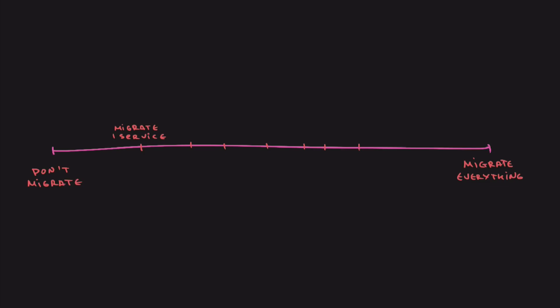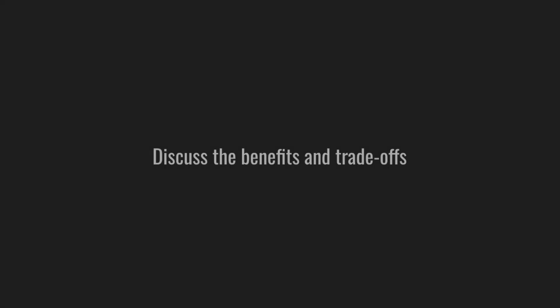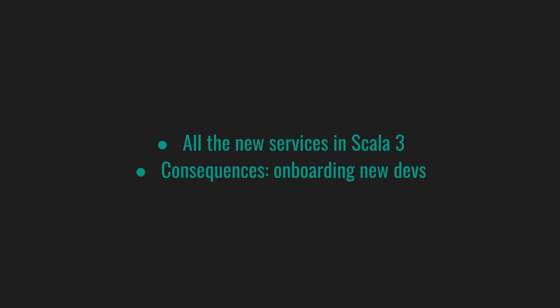Or should you leave the old services untouched and write all the new services in Scala 3? What about internal libraries? How much time and resources can you allocate? The last question is probably the hardest one to address. It's also an excellent time to discuss the benefits and trade-offs — and keep it fair. For example, if you just want a new shiny syntax, is it worth disturbing an old service that hasn't been touched in years? Up to you to decide.